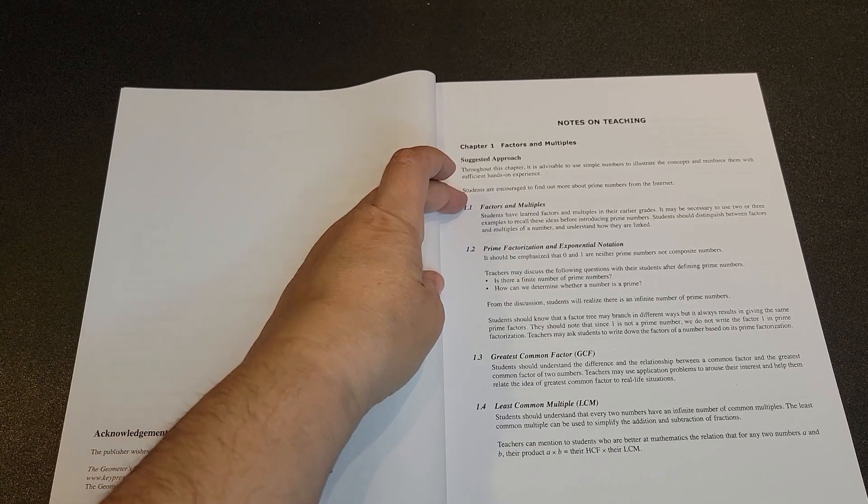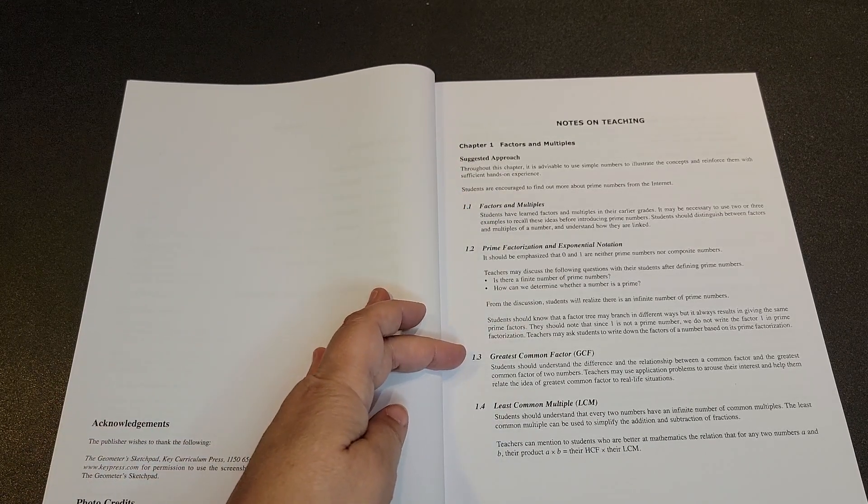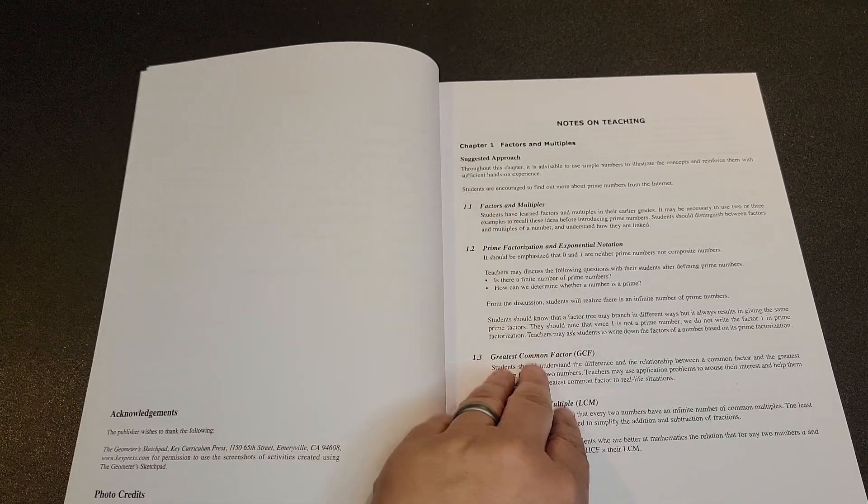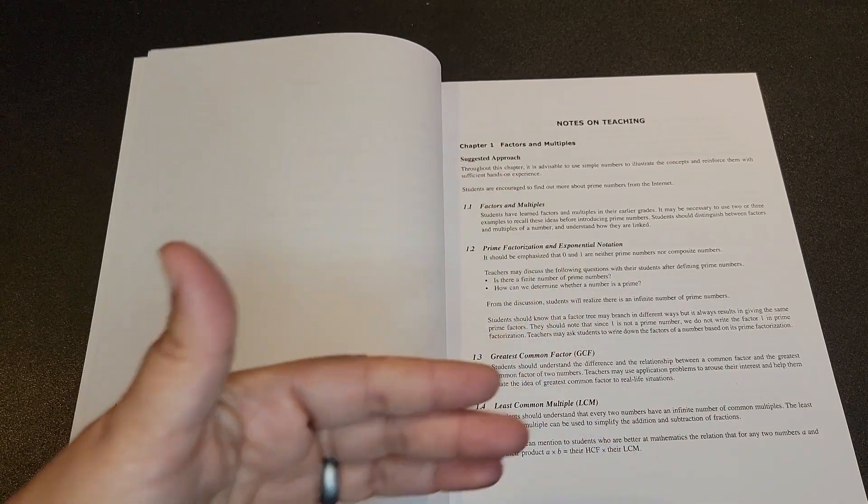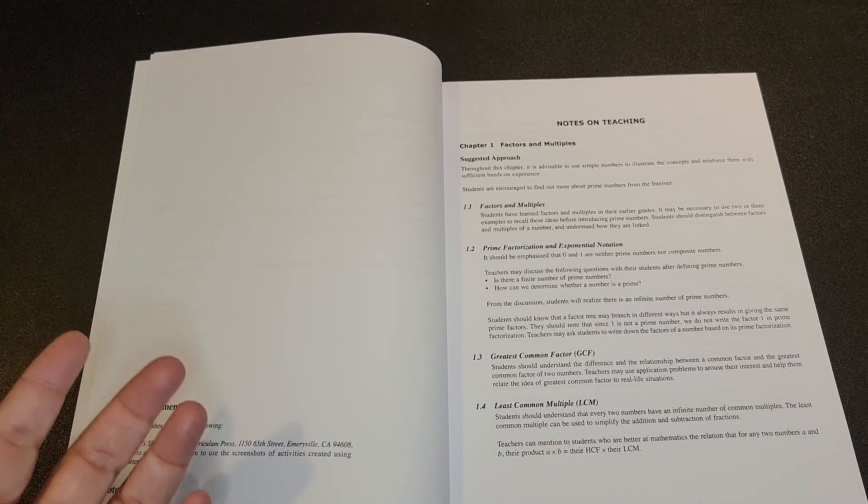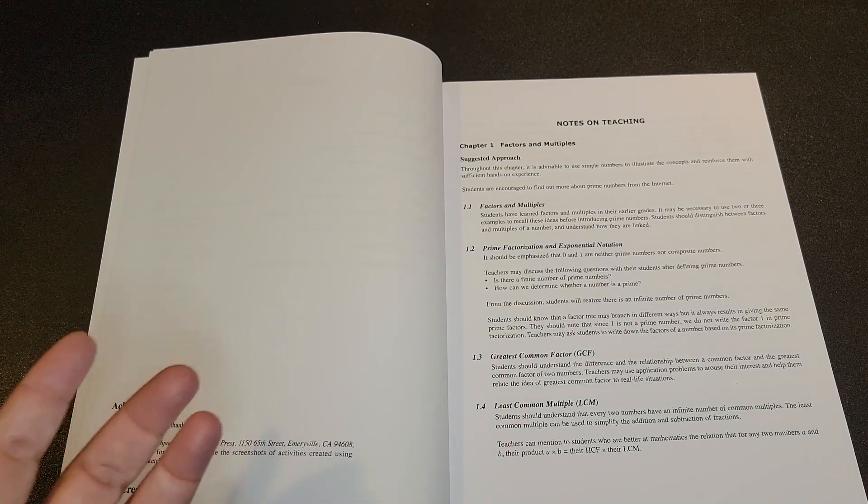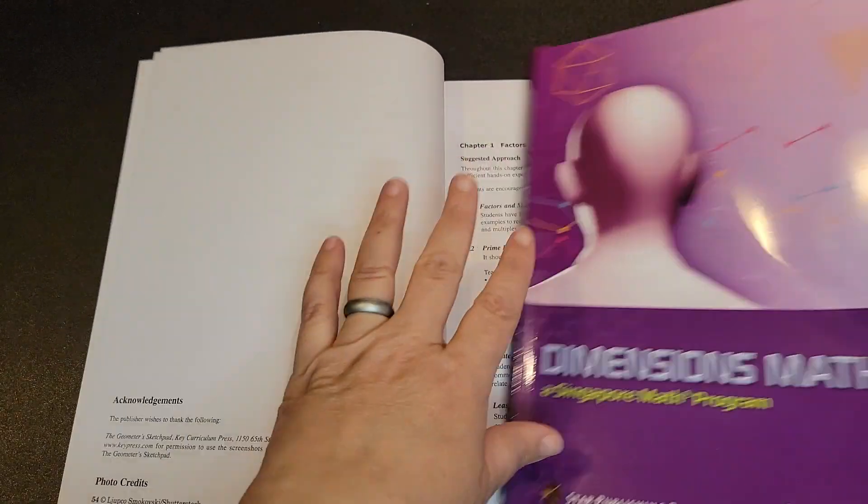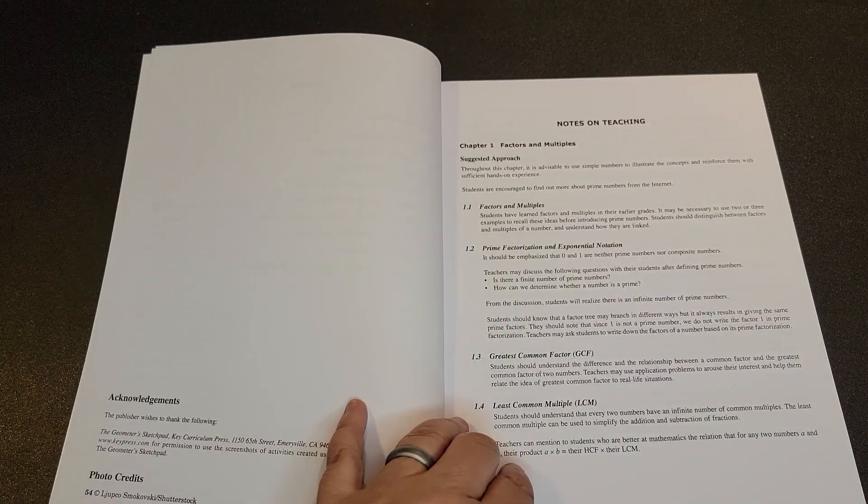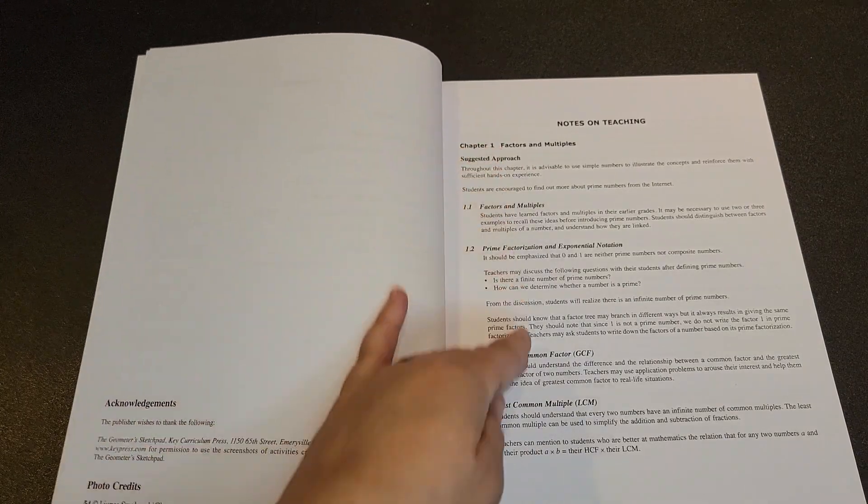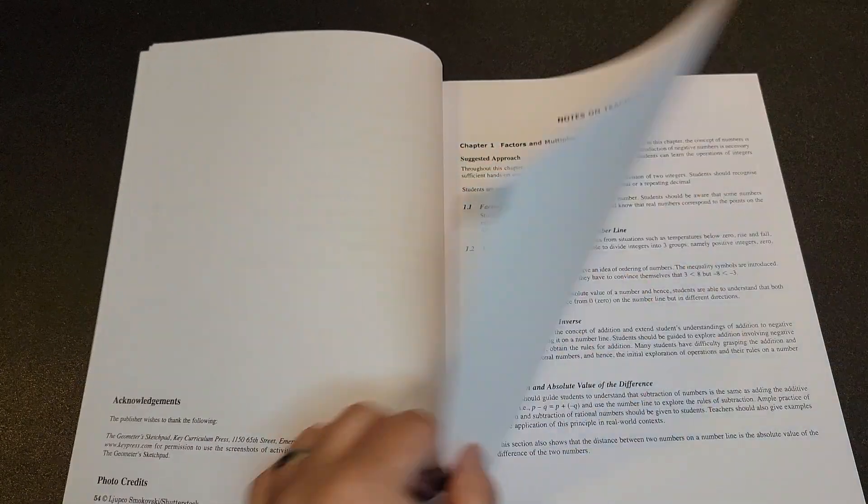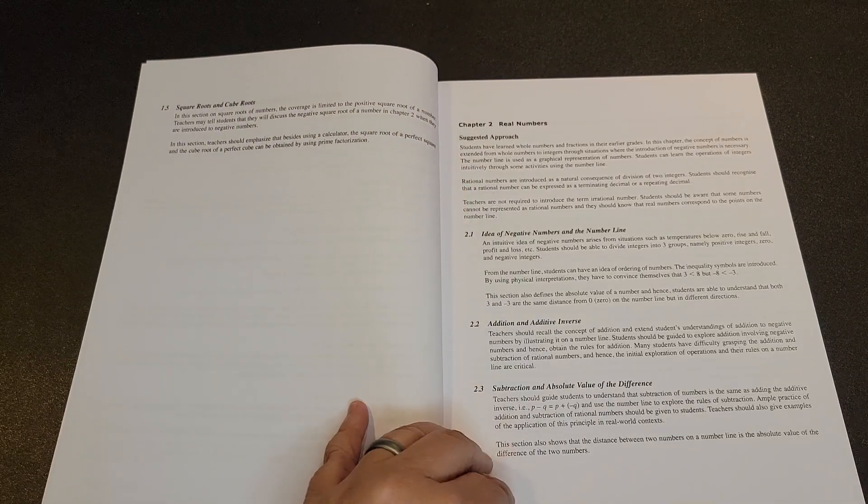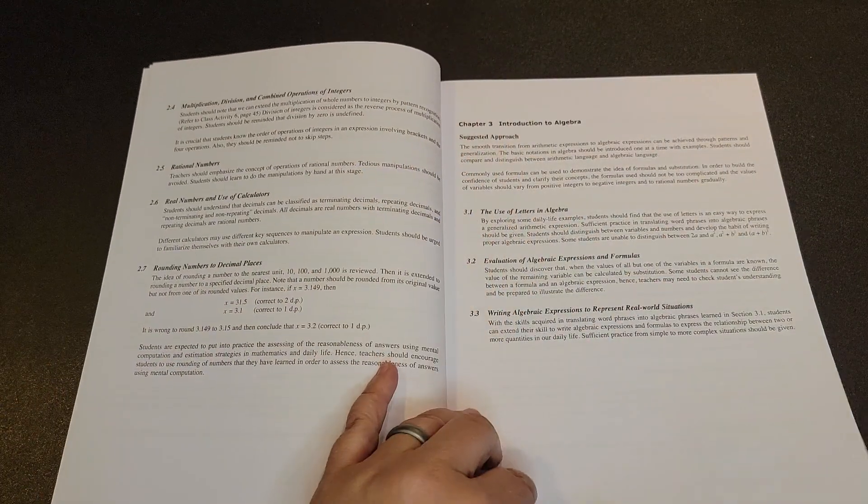So for each of the different sections, it's going to give you a little bit of information on how they're recommending you teach it. And that is your teaching guide. There's no pages from the individual student textbook. You're not going to see these pages in this teaching manual. What you will just see is this for your teaching part of it. So this is notes on teaching. And then they go to chapter two with your notes on teaching. Chapter three, notes on teaching.